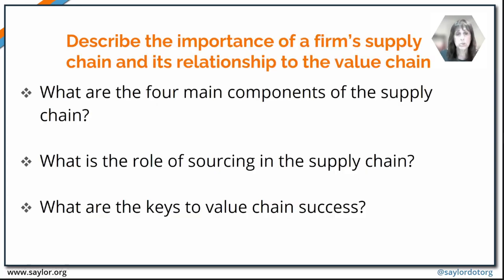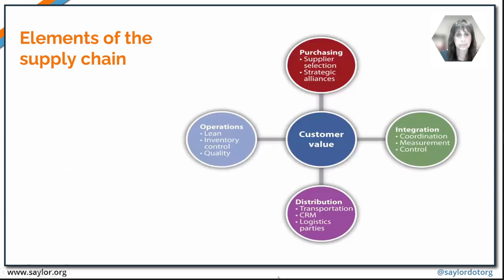Learning outcome two is to describe the importance of a firm's supply chain and its relationship to the value chain. The main elements of the supply chain begin with purchasing, which involves buying all of the materials needed to produce the finished goods. You have to select your suppliers, create strategic alliances, and get the materials needed to manufacture whatever it is you're offering to consumers.